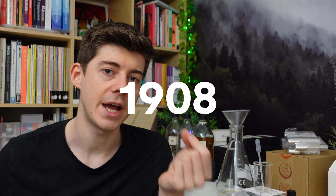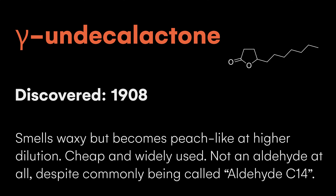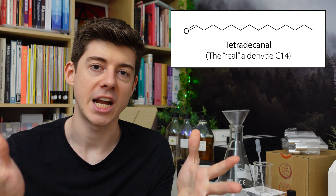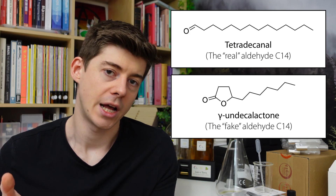Around this time, in 1908, another molecule was discovered called gamma-undecalactone. This molecule smelled a little bit waxy, but when diluted down far enough it started to smell like peaches. The manufacturers decided to sell this as something called aldehyde C14, partly because calling molecules 'aldehyde C' plus a number was trendy at the time, and apparently also because they didn't want to reveal what the molecule actually was — calling it aldehyde C14 threw people off the trail, since if you actually made the true straight-chain C14 aldehyde you would get a completely different molecule.